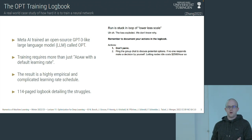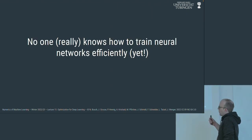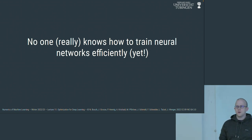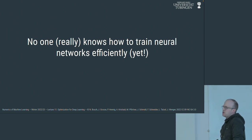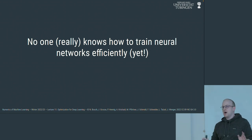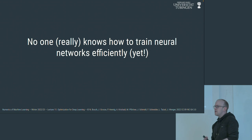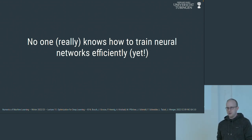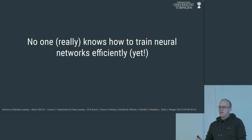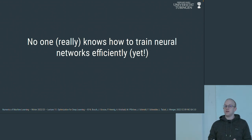Last month I organized a workshop at NeurIPS, getting all the experts in one room to discuss how we train neural networks. We had the first author of the OPT paper, the author of the Adam paper, and experts from Google and Meta. A very fair summary of the outcome is that currently no one really knows how to train neural networks efficiently. We have some intuitions and guidelines, but it's all very vague.